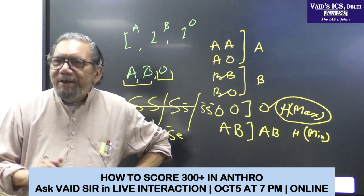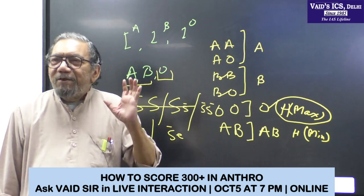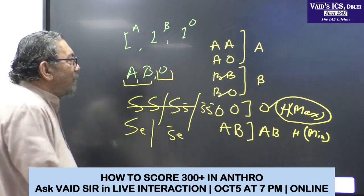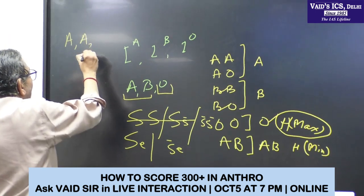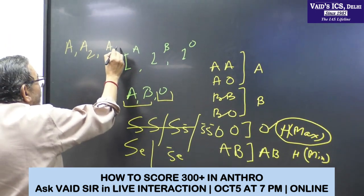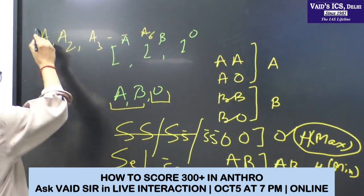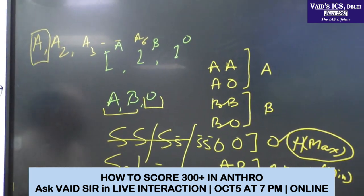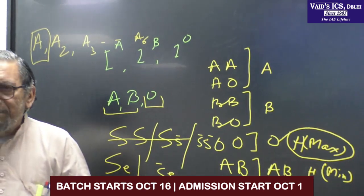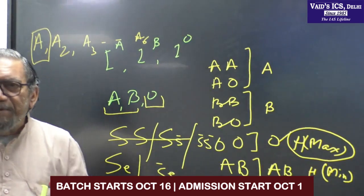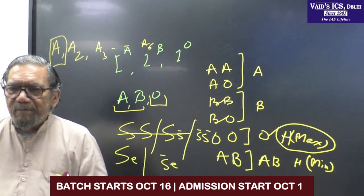One more thing: in blood group A, there are several sub-alleles. You have alleles A1, A2, A3, A4, up to A6. But only A1 is found in more than 99% of cases; the others are rare alleles. The examiner has not specifically asked about this.